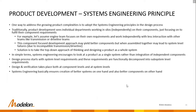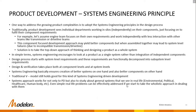System engineering encourages us to look at a product as a single holistic system rather than an integration of independent components. The design process starts with system-level requirements, which are functionally decomposed into subsystem-level requirements. Design and verification take place at both component and system levels. Systems engineering ensures the creation of better systems and better components. This approach works not only for product development but also to study general systems in the real world, such as environmental, political, healthcare systems, or even the human body.